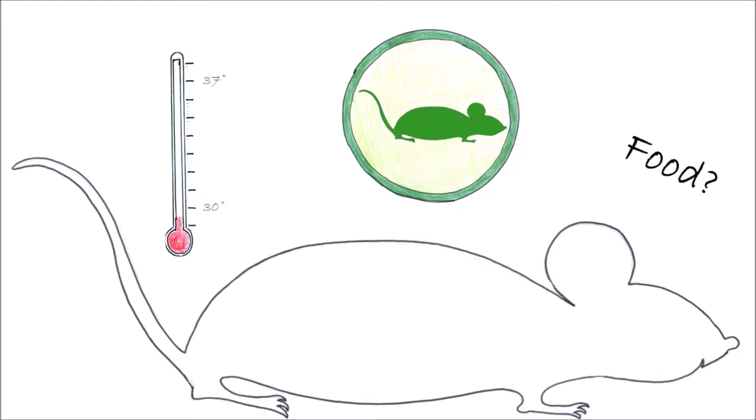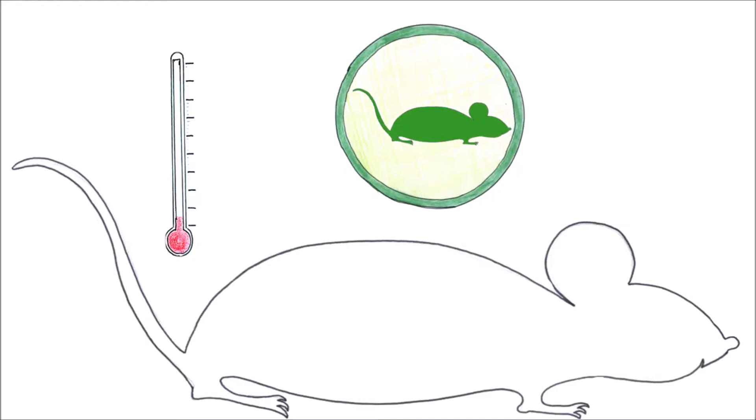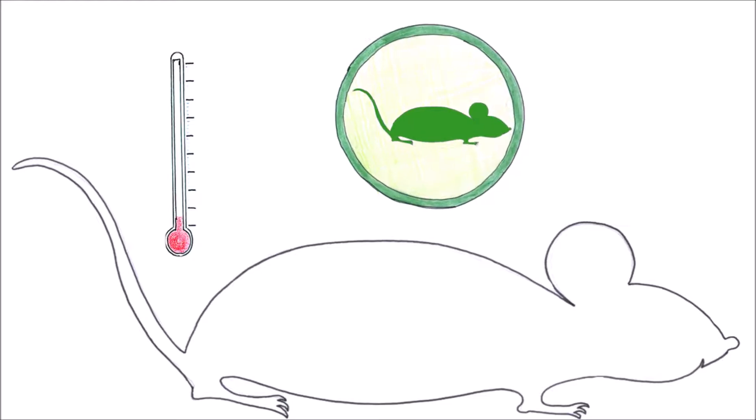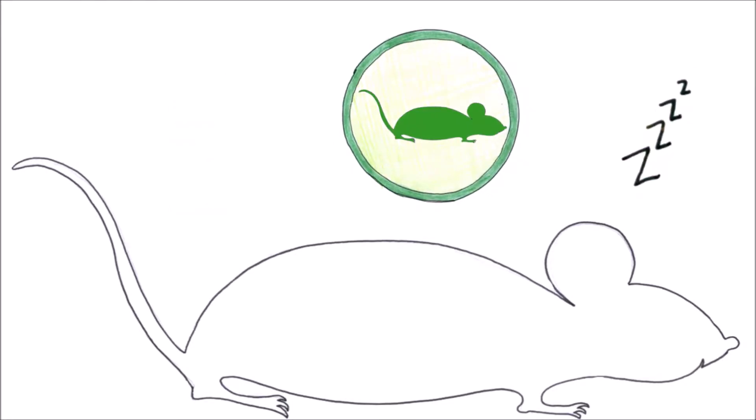In the state of torpor, the need for energy in the body is greatly reduced, usually combined with a lower body temperature, dropping from 37 to below 30 degrees Celsius. Although it might look similar from the outside, hibernation is not the same as actual sleep.